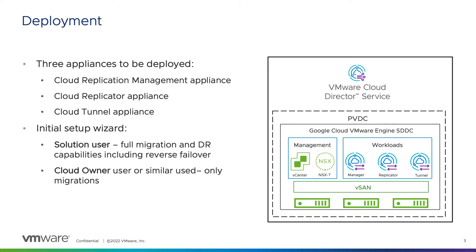This means it will provide migration, protection and reverse failover, similar to when the destination is a Cloud Director Private Cloud. If it is impossible to operate with one of the solution users, the cloud owner or similar user can be used instead. However, this means only the VMC data engine can be utilized, which will lead to limiting the functionality. The tenants will be able to perform only migrations.